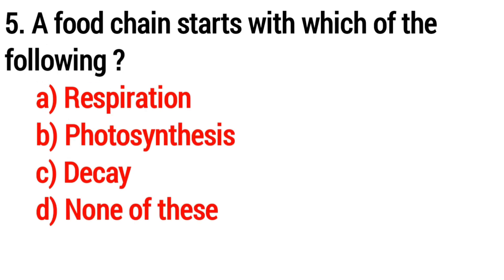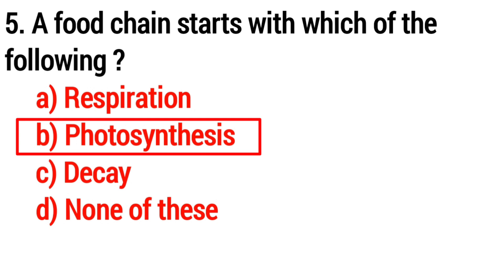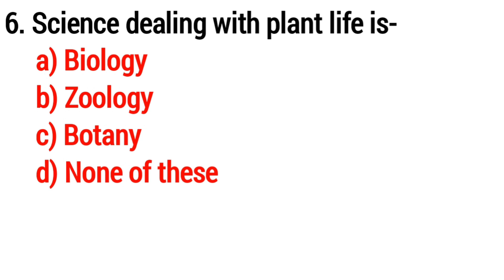Question number five: a food chain starts with which of the following? Answer: option B, photosynthesis. Question number six: the science dealing with plant life is? Answer: option C, botany.